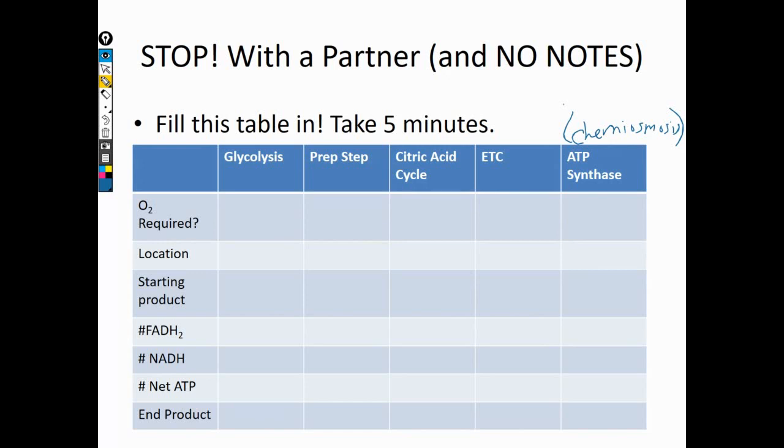Was it aerobic? In other words, did we use some kind of oxygen? Where in the cell were we? What was the material we started that step with? What did we get for electron carriers? If any. What did we get for net ATP? If any. So some of these numbers may be zero. And what was the end product? So what was the end part of that step that we moved on to the next step with?